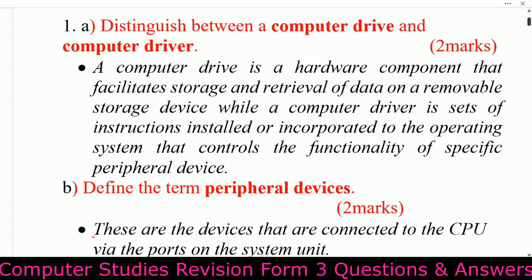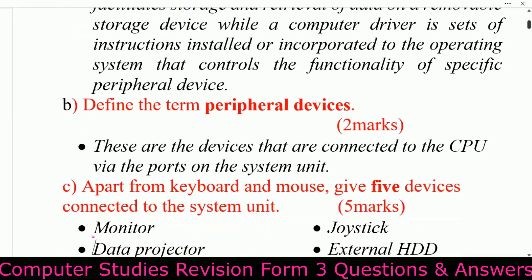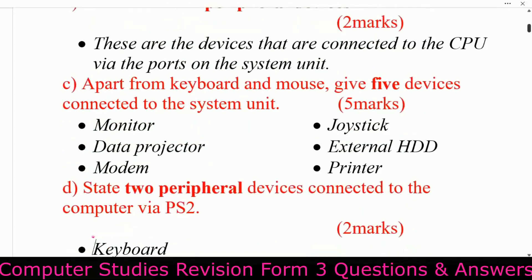Next, define the term peripheral devices. Peripheral devices are the devices that are connected to the CPU via ports on the system unit. Next, apart from keyboard and mouse, give five devices connected to the system unit.